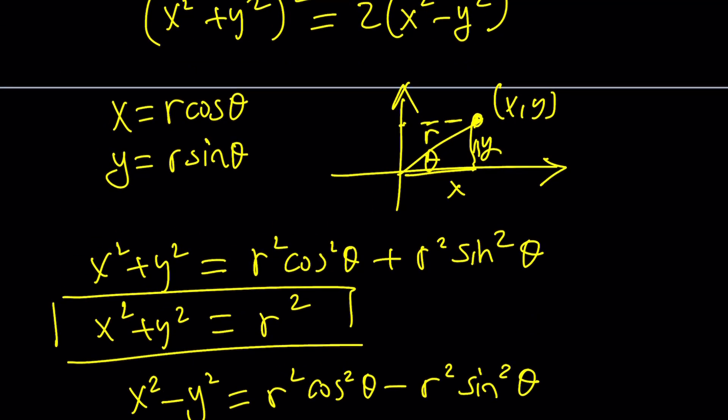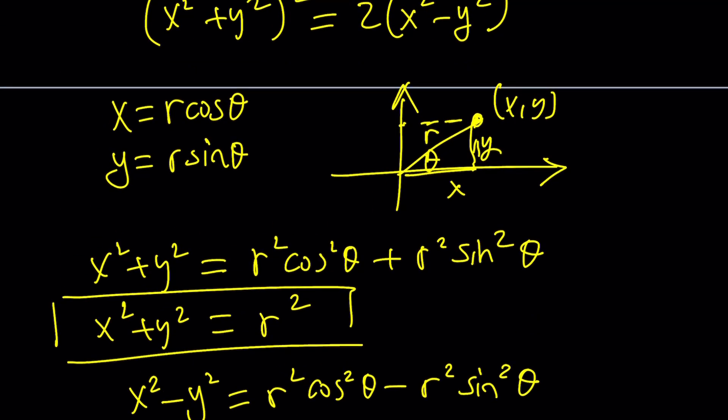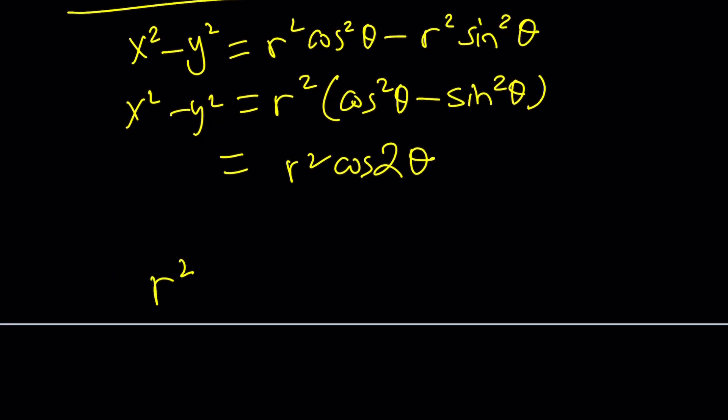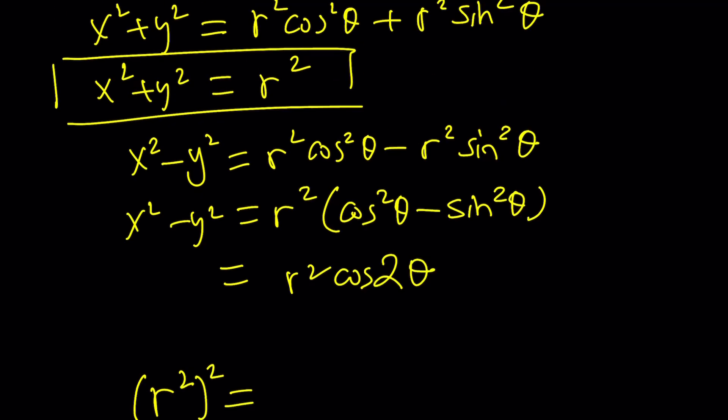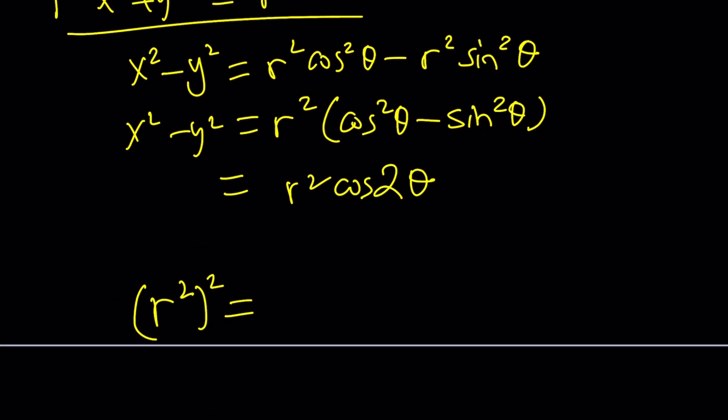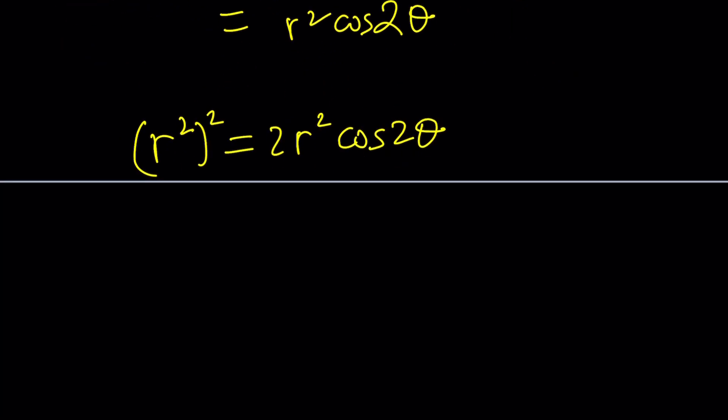We're going to replace x squared plus y squared with r squared. So it's going to be like r squared squared. And on the right hand side, we're going to have 2 times r squared cosine 2 theta. Obviously, this is going to be r to the fourth power.